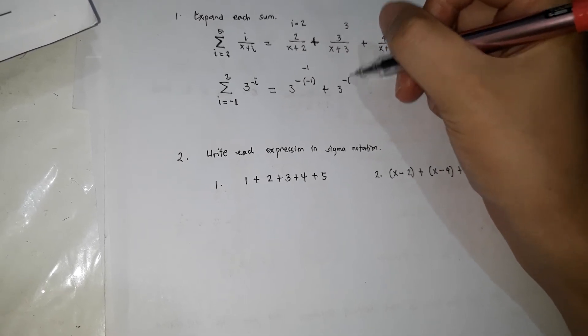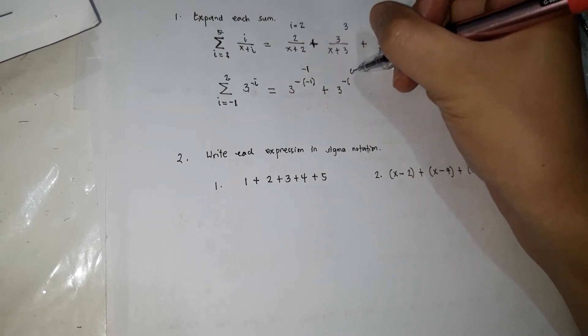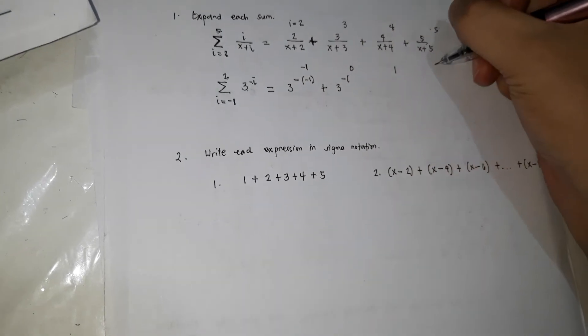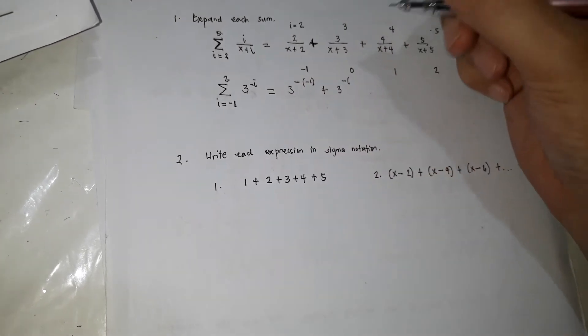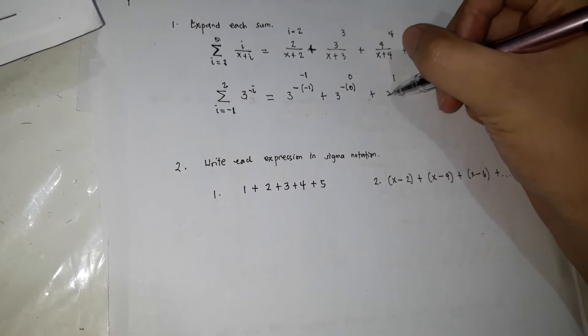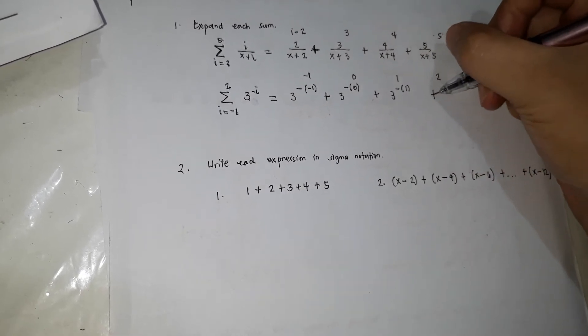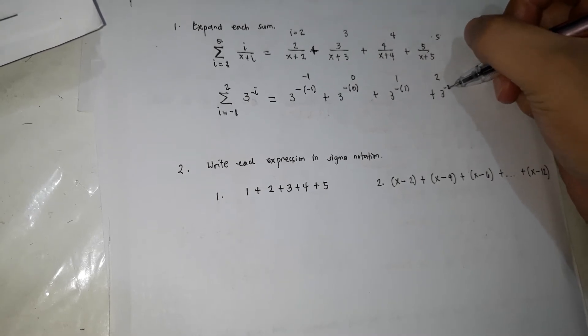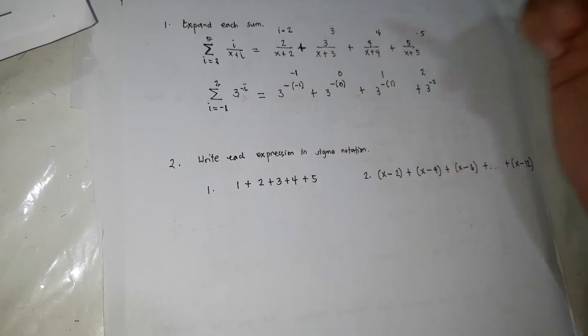Plus 3 to the negative, ang i. Palitan mo ng sunod sa i. That's 0. Sunod 1, sunod 2. And that's the last value kasi from negative 1 to 2. 0. Plus 3 to the negative 1. Plus 3 to the negative 2. So this is the expansion of this sigma notation.